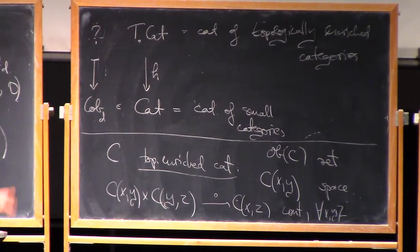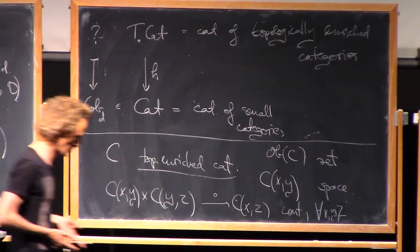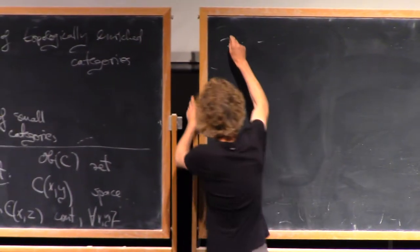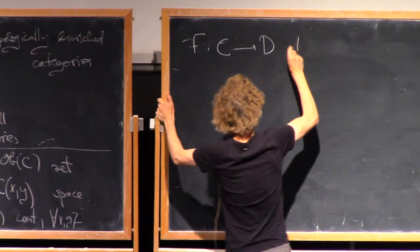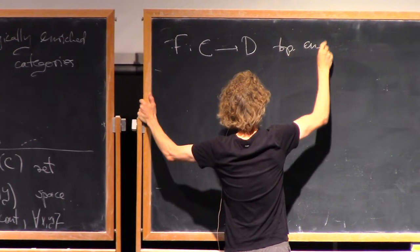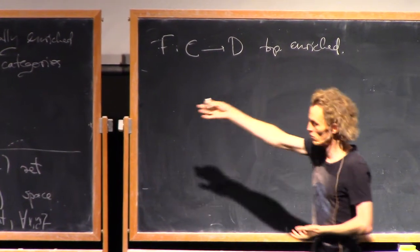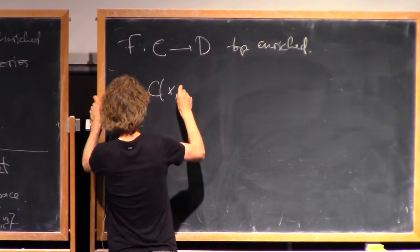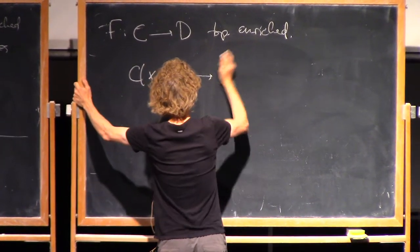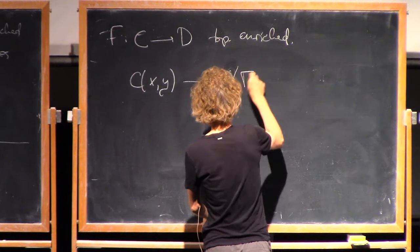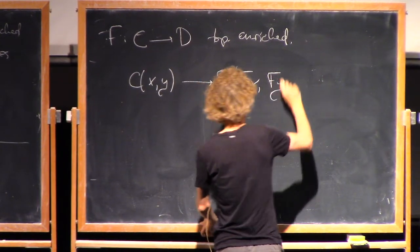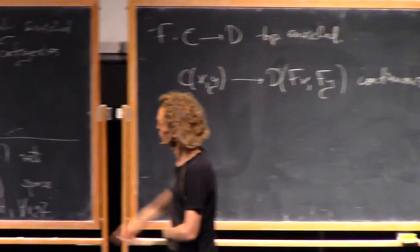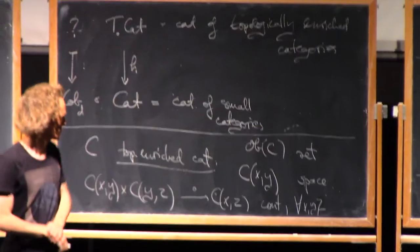And a functor of topologically enriched categories, let's call it a topologically enriched functor, also sometimes called a continuous functor, it's just the usual thing. And the only extra thing to say is that the induced map of morphism spaces should be continuous.